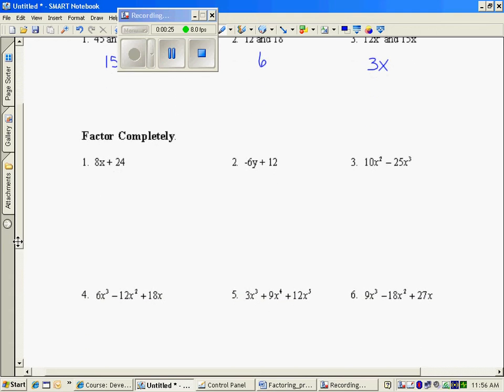So to factor completely, we are undistributing. What could have been distributed to both the 8 and the 24? That would have been 8. 8 times x is 8x. 8 times 3 is 24. You have to look for the largest common factor.